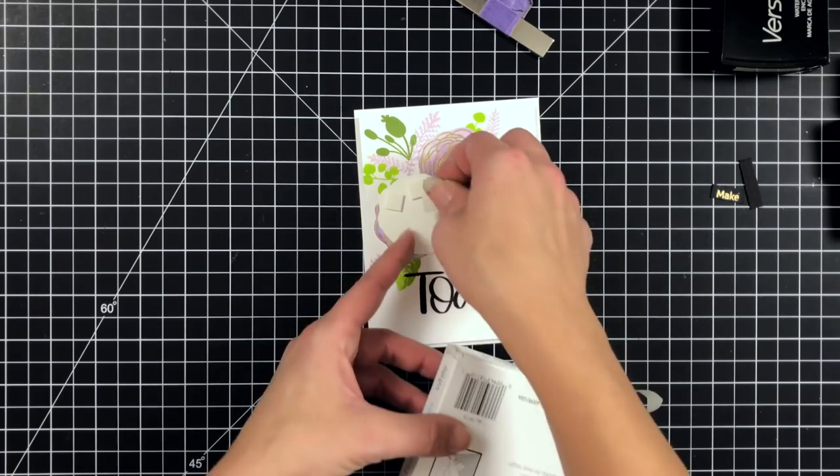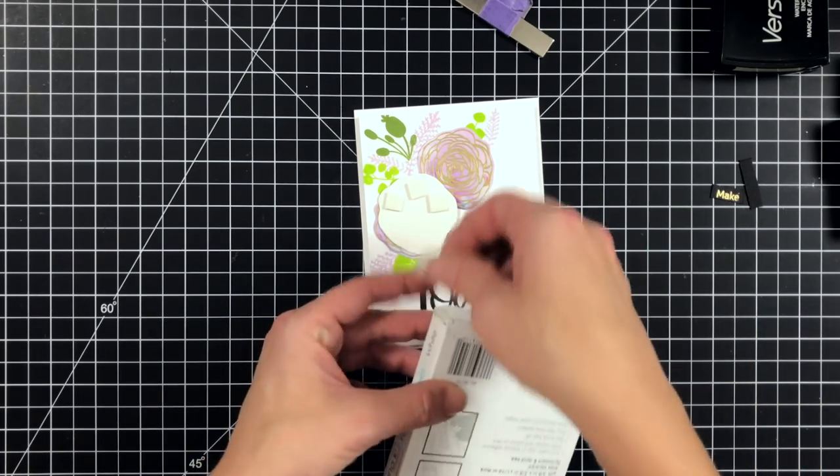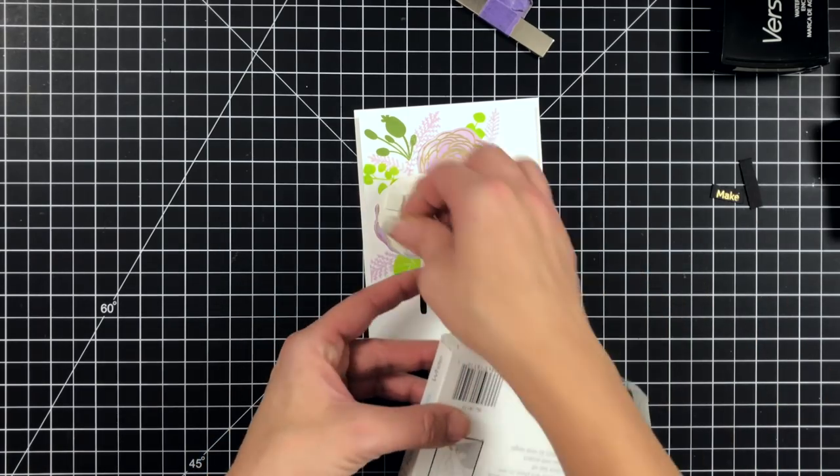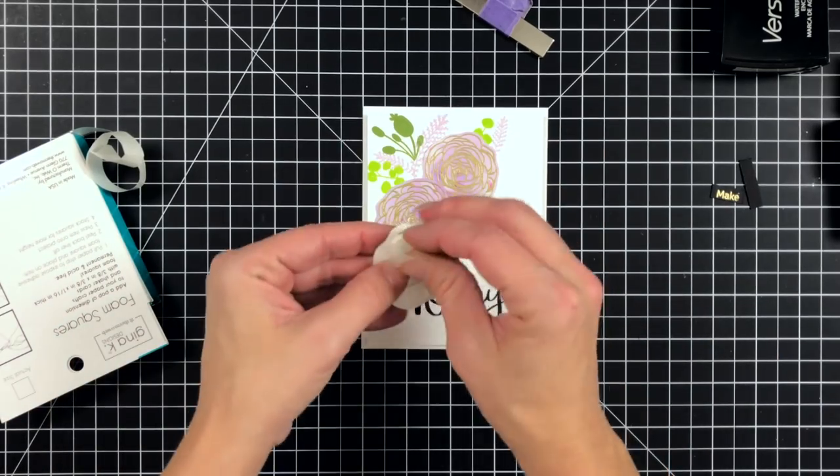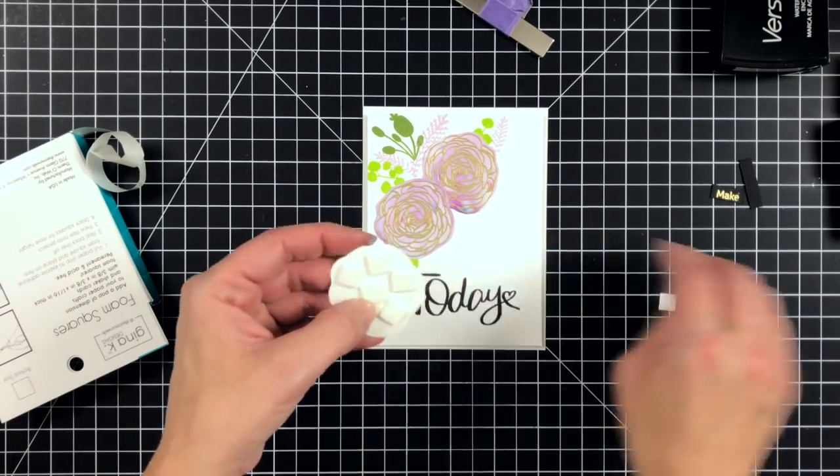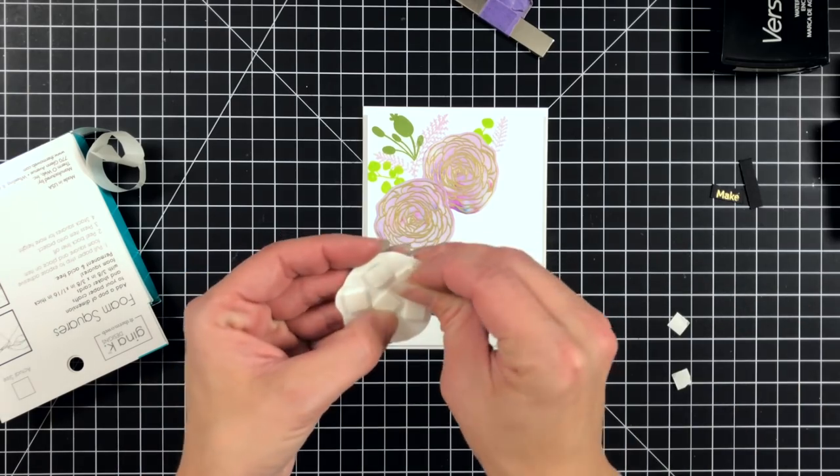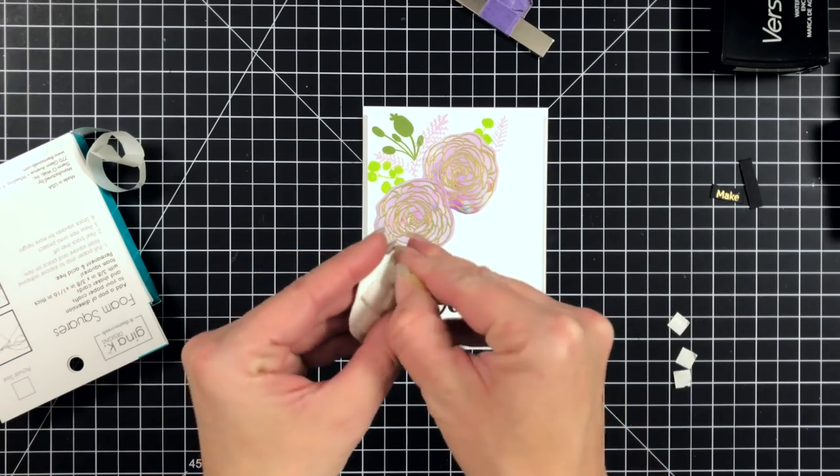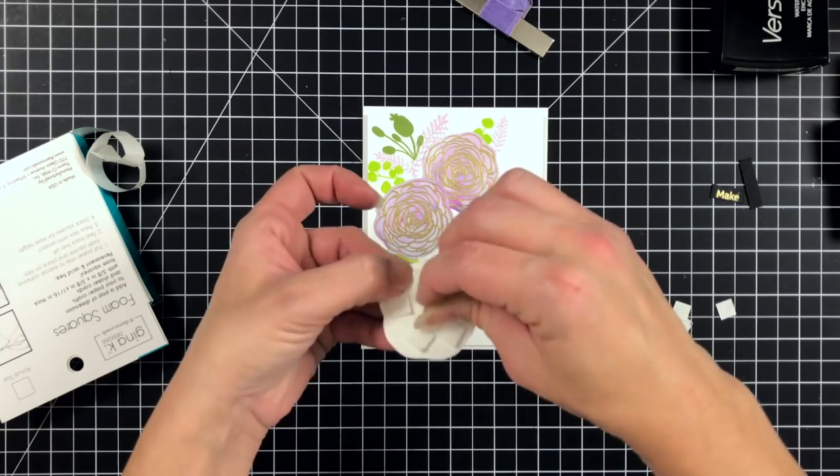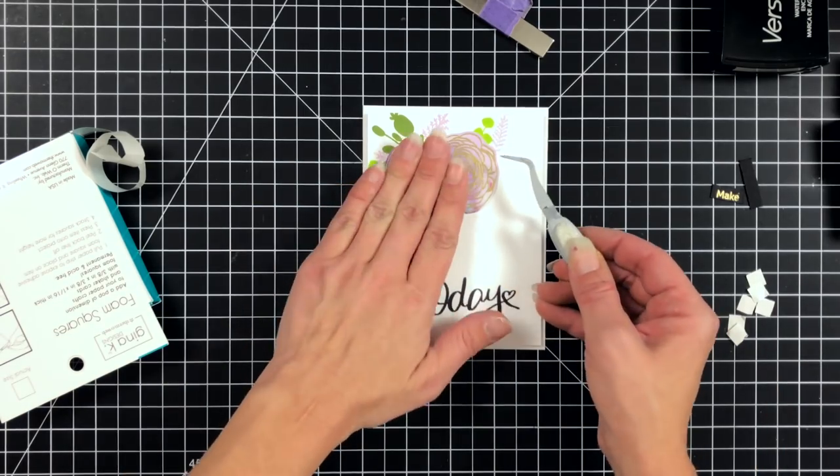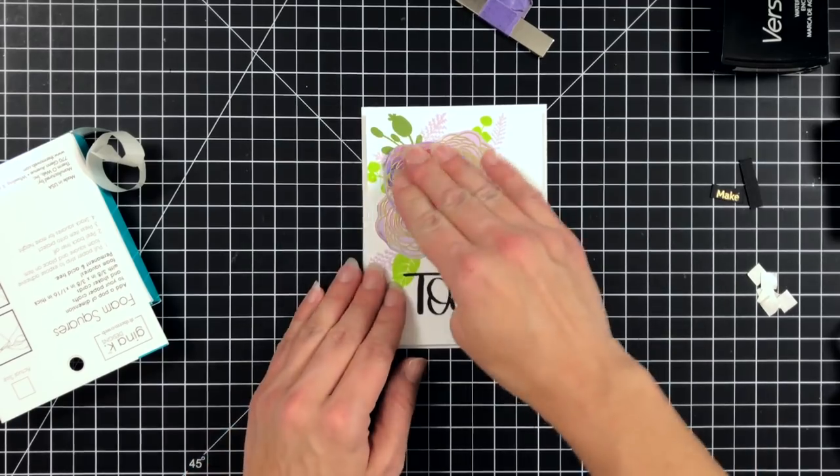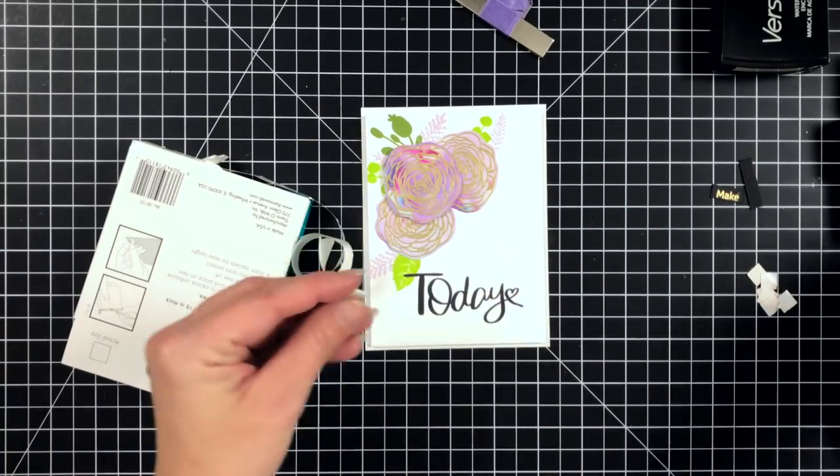I am really loving Gina's foam squares. These are just the perfect size when you want to add a little bit of dimension to your images or onto your card. You can double up if you wanted to add a little bit more lift to them, but I really liked adding just the one layer to my center flower and I'll just add that to that little cluster I created at the top.